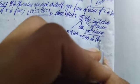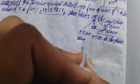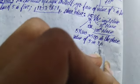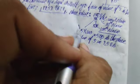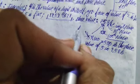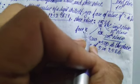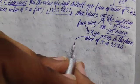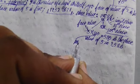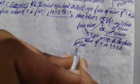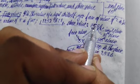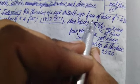So the place value of 5 in 2586 is 500. The face value of 5 is 5, and 100 is the position where this digit 5 exists inside this number.